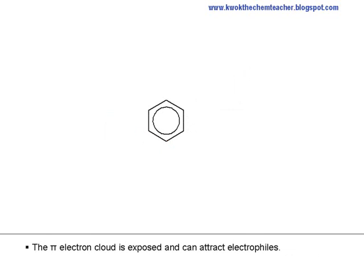The pi electron cloud is exposed and can attract electrophiles. However, as benzene is made more stable, a stronger electrophile is needed.